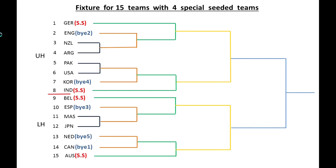The first match is between New Zealand and Argentina — Argentina has won. Second match between Pakistan and USA — Pakistan has won. Third match between Malaysia and Japan — Malaysia has won. In the second round, Argentina plays England — England has the bye — Argentina has won. Pakistan versus Korea — Korea has won. Malaysia versus Spain — Spain has won. Netherlands versus Canada — Netherlands has won. In the quarter finals, Argentina versus Germany — Germany has won. Korea versus England — India has won. Belgium versus Spain — Belgium has won. Netherlands versus Australia — Netherlands has won.